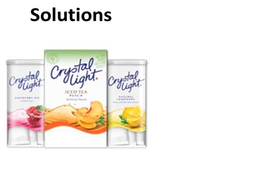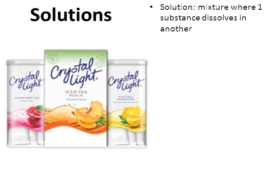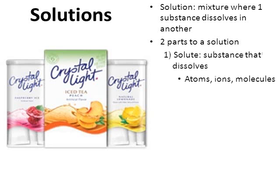Now let's shift our attention to solutions. If you've ever mixed up Crystal Light, Kool-Aid, or lemonade, you've made yourself a homemade solution. A solution is a mixture where one substance will dissolve in another substance. Solutions are made from two parts. The first part is called the solute — these are the substances that are going to dissolve. In a biological solution, you might find atoms, ions, and molecules dissolved inside. The powder from these drinks is a great example of a solute — you mix them with water and the powder dissolves.